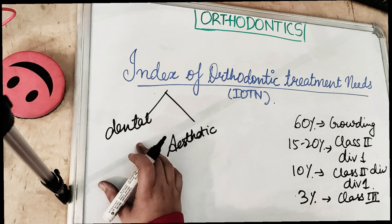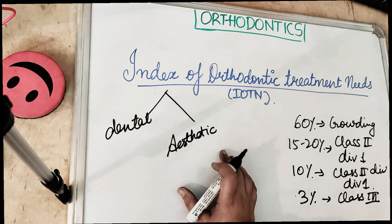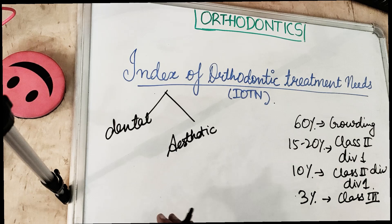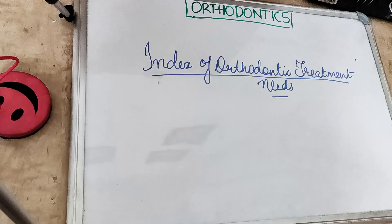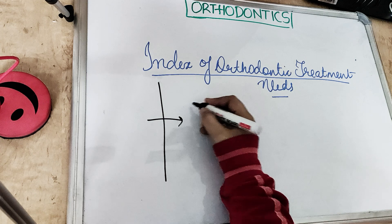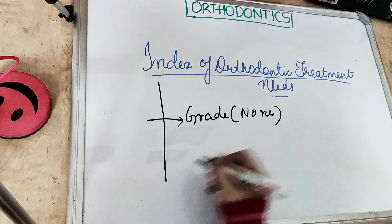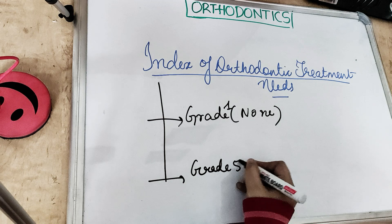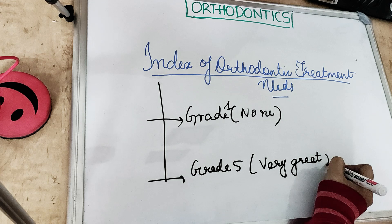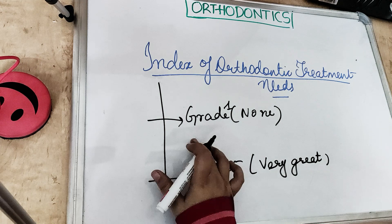The aesthetic component is based on a series of 10 photographs of the front view of the labial aspect of the class of malocclusion, and a score is determined based on the photographs. It is divided into five categories, with Grade 1 being none and Grade 5 being a very great requirement for orthodontic treatment. A patient's grade is determined by recording the single worst feature of their malocclusion.